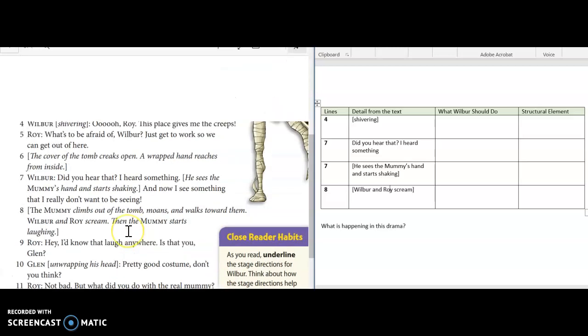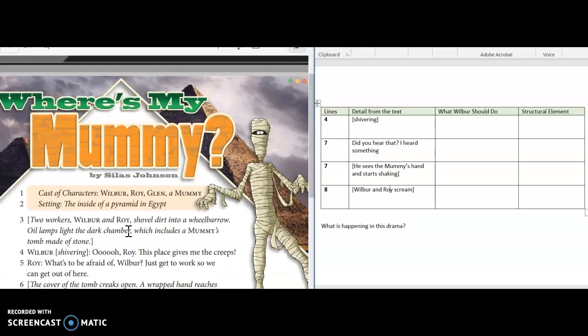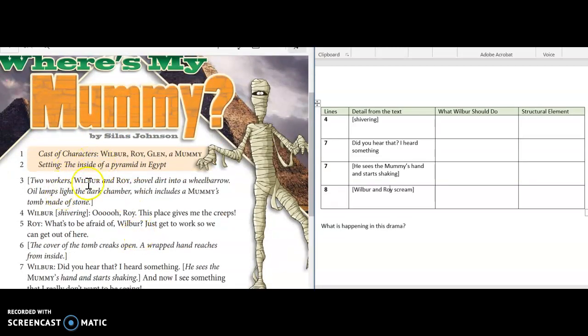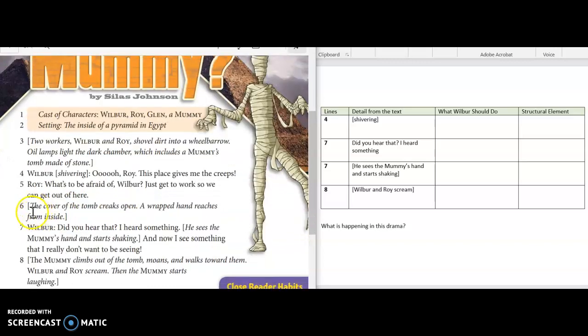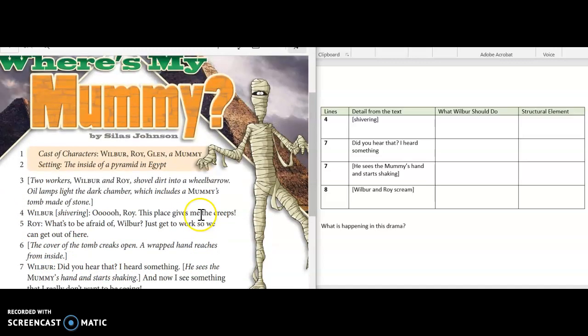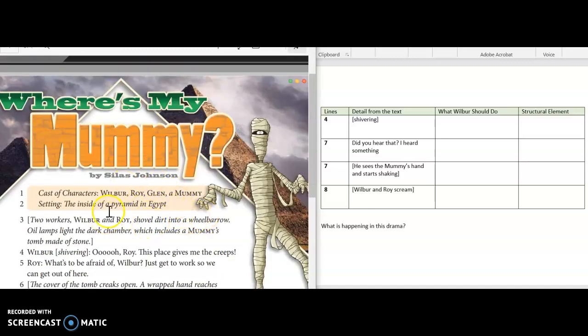Okay, so again just me modeling how I would read through this again, paying attention to each one of these structural elements. And then typically when I'm reading through these dramas when I encounter one of the characters I try to give them a voice, and it helps me to differentiate between is this Wilbur talking or is this Roy. So a different voice for each of those characters as I'm reading along just helps me so that I better comprehend what I've read.